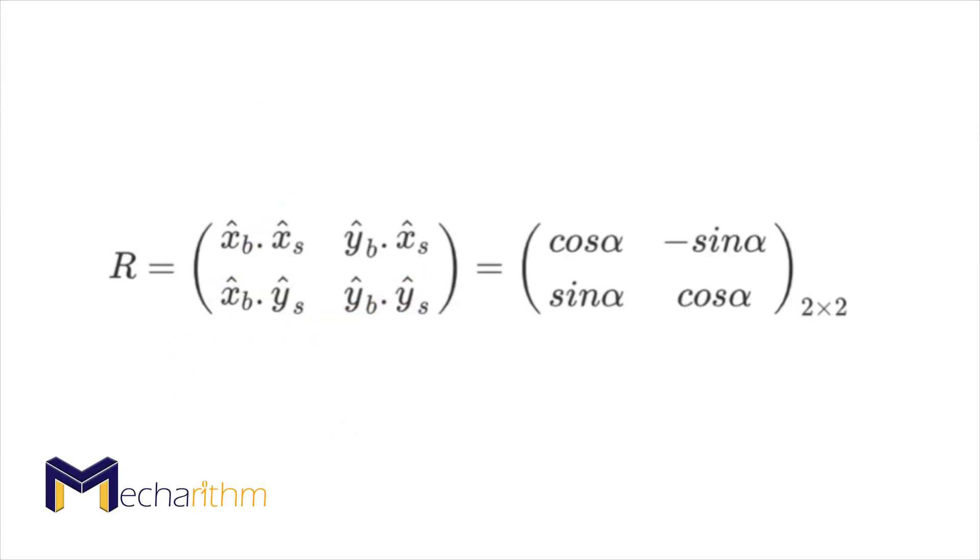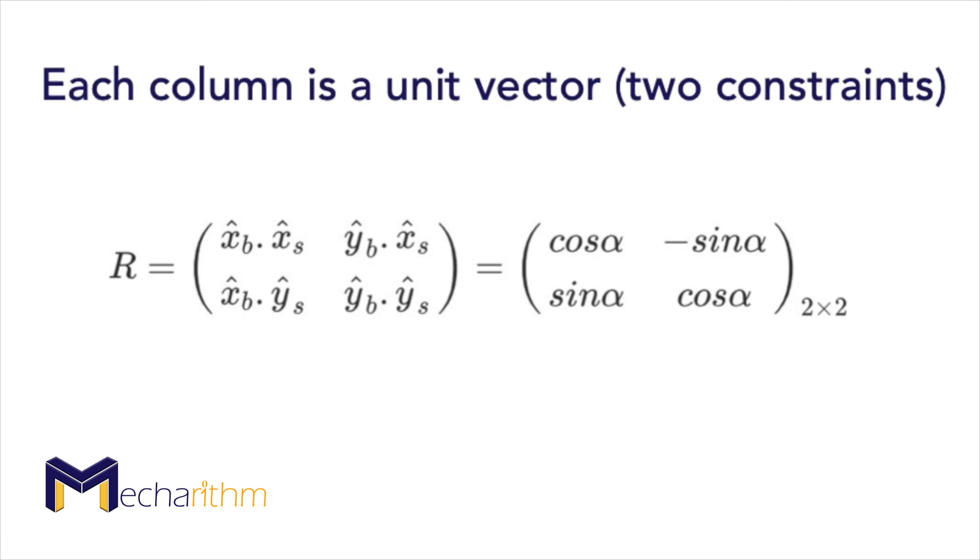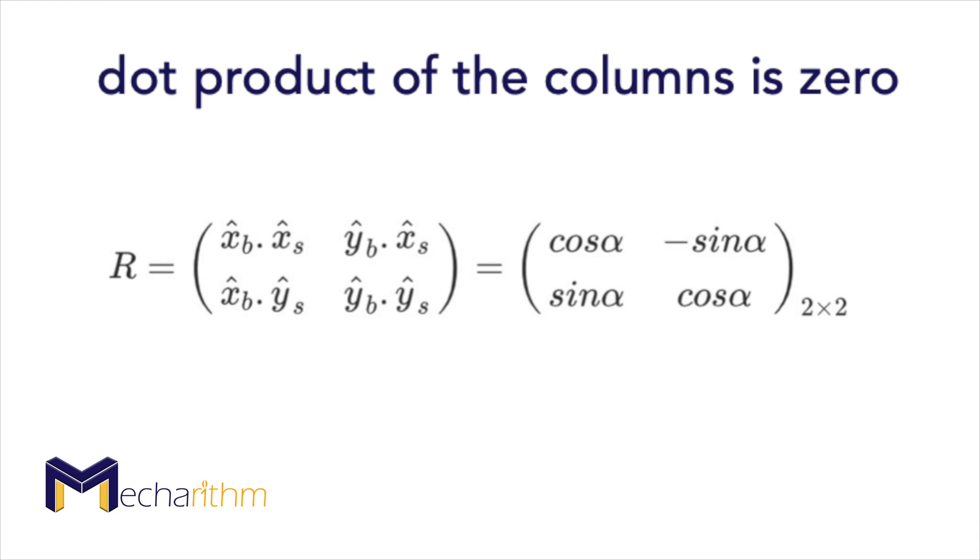The two-by-two rotation matrix belongs to the four-dimensional space subject to the three constraints. These constraints are each column of the rotation matrix is a unit vector. In other words, the lengths of the column vectors are one. And this is obvious because the column vectors of the rotation matrix are coordinate frames. And also, because these coordinate frames are orthogonal to each other, then the dot product of the columns is zero.